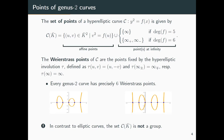An important set of points are so-called Weierstrass points — the points fixed by the hyperelliptic involution, which is the map sending (x, y) to (x, -y). In the degree 5 case, the point at infinity is a Weierstrass point; in the degree 6 case, the two points at infinity are permuted. Every genus 2 curve has exactly six Weierstrass points — in the degree 5 picture you can only see 5 because the point at infinity isn't visible.